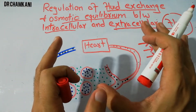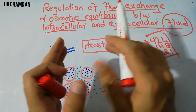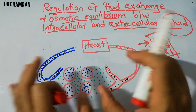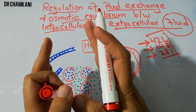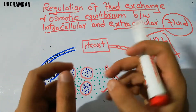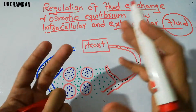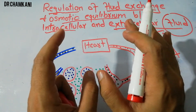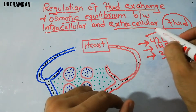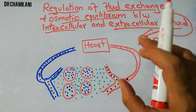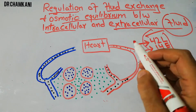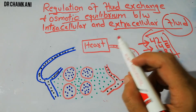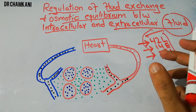Now, what are basically the forces responsible for this fluid exchange, and how are they regulating the osmotic equilibrium between the extracellular fluid compartment and the intracellular fluid compartment? We are studying the renal system — the kidneys and the body fluids — and we need to understand that the body must maintain a proper amount of fluid and electrolytes. There are four main forces which are playing their role at the level of the plasma and the interstitial fluid.